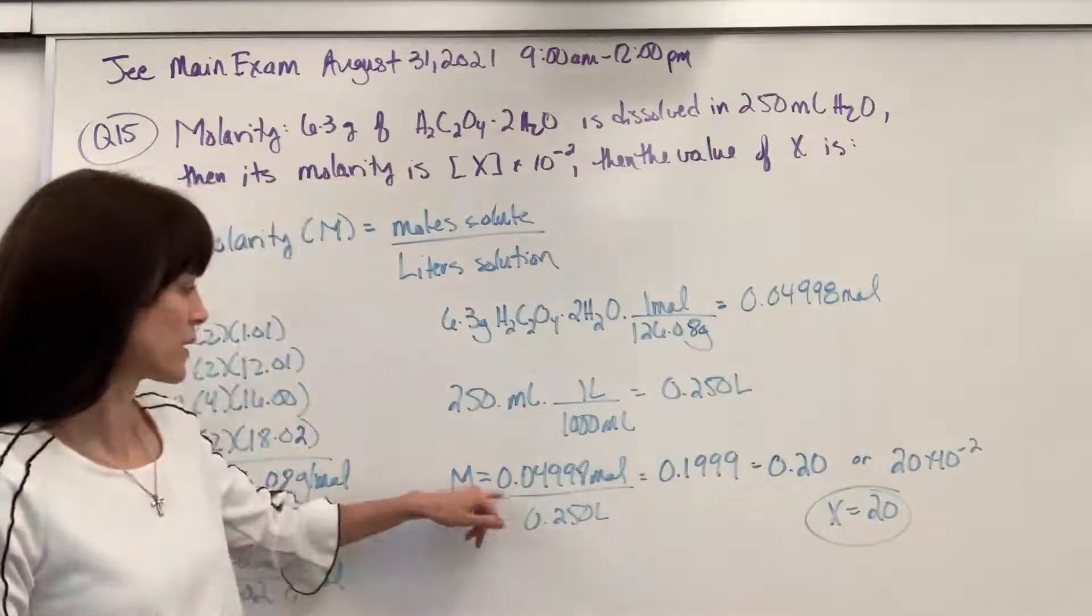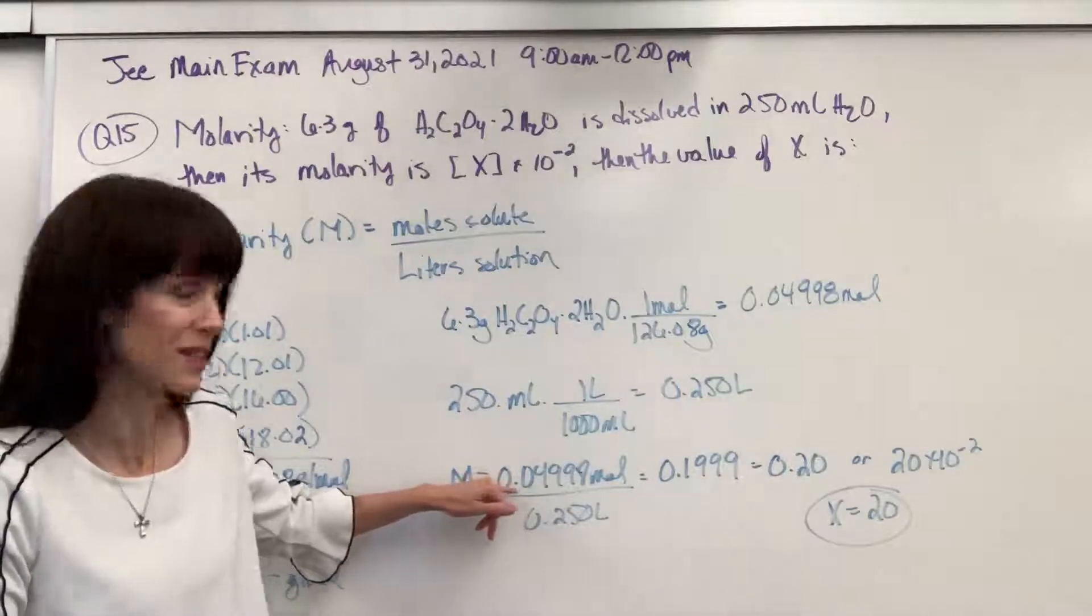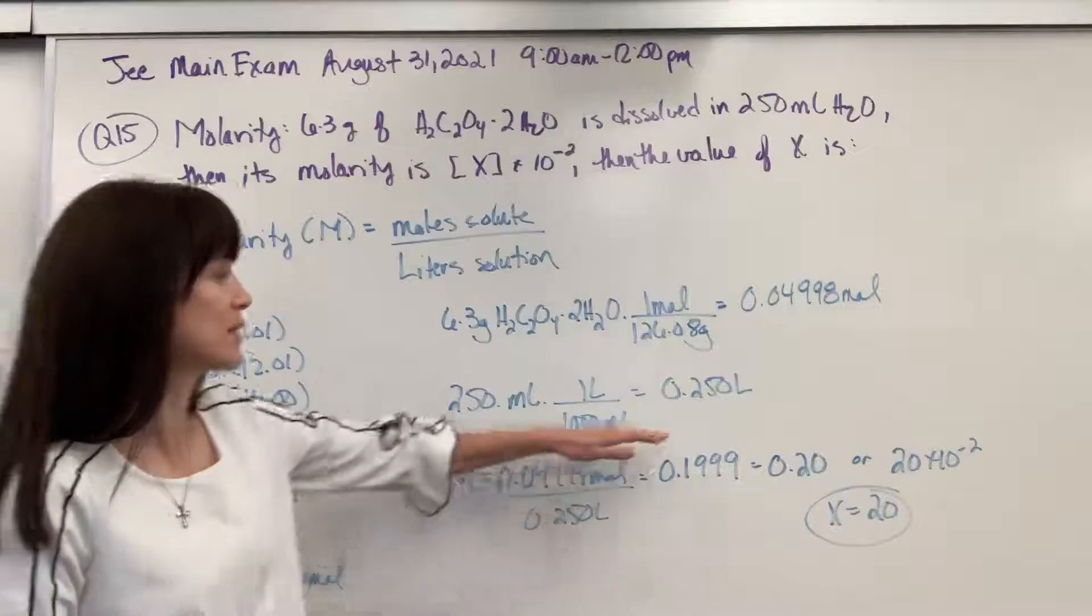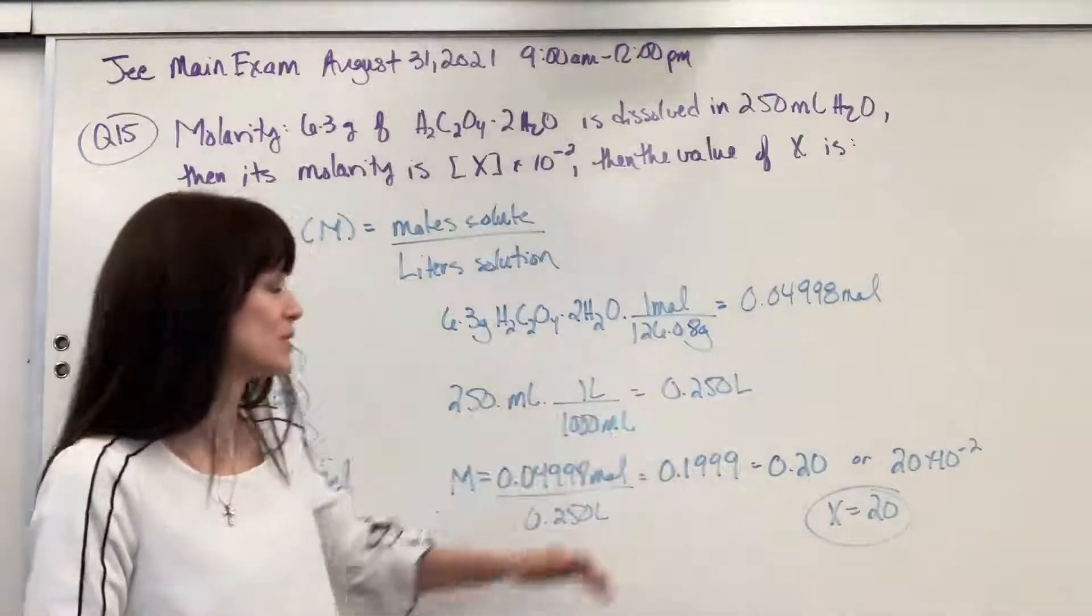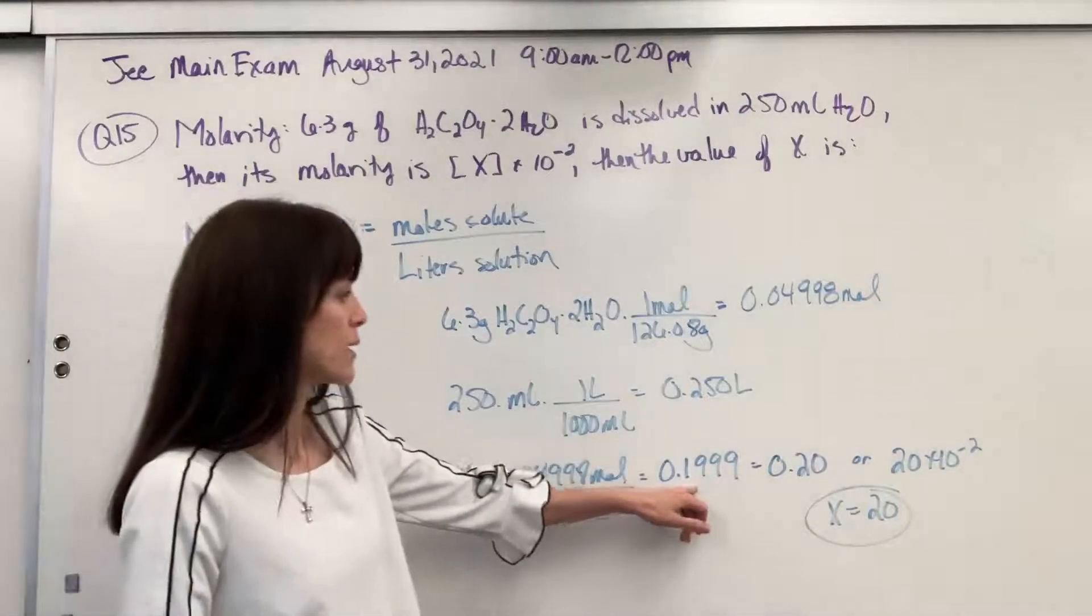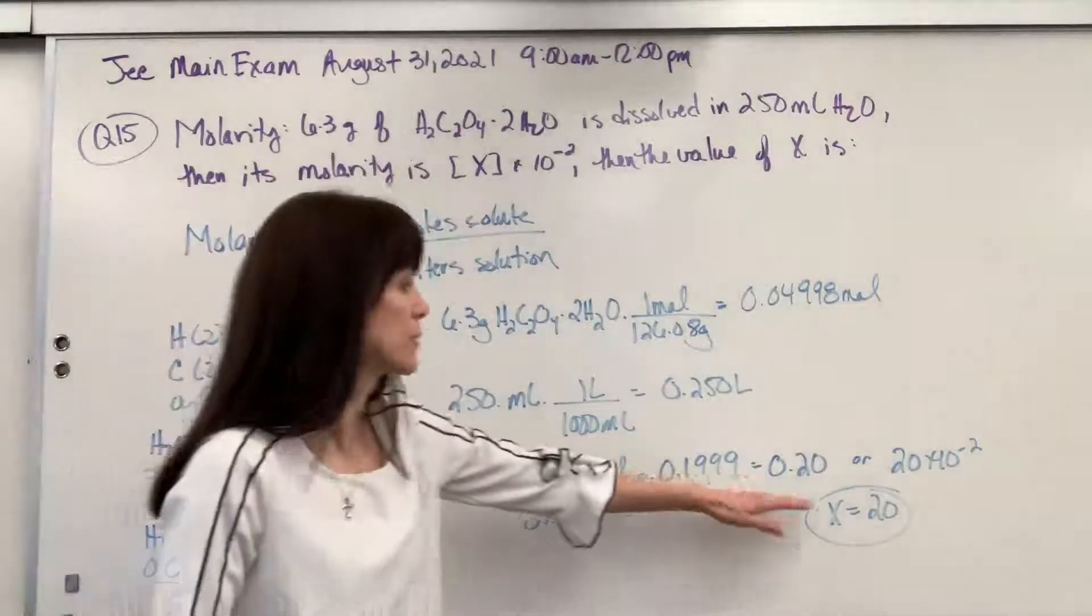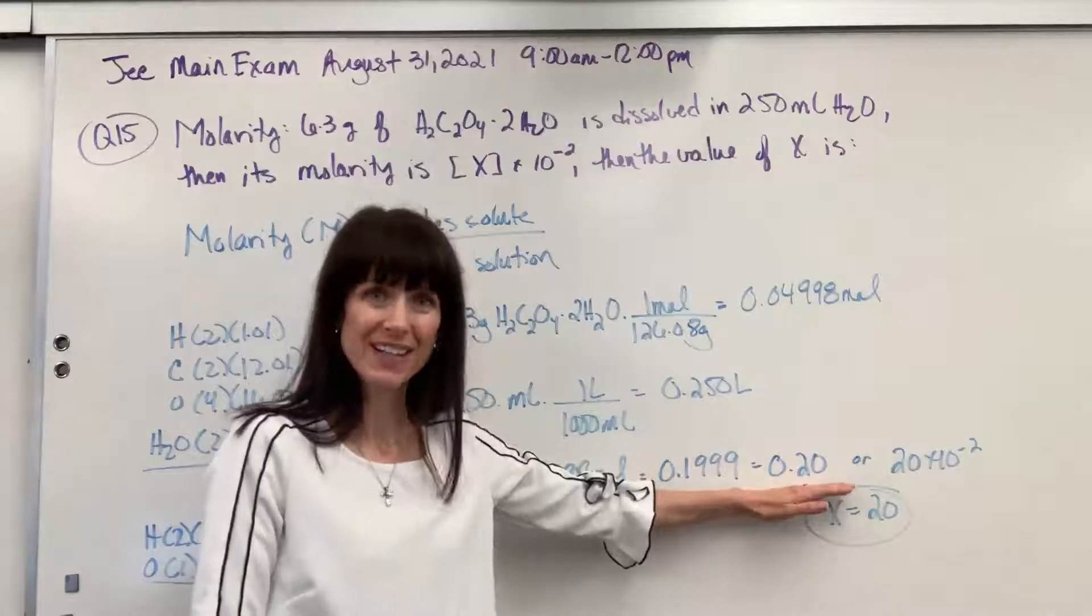We have got the molarity. It's going to be moles. My answer, 0.04998 moles, divided by the volume of the solution, 0.25, and we get 0.19999. Now they gave us two sig figs here, so we'll report it to two sig figs. That would be my molarity.